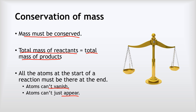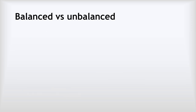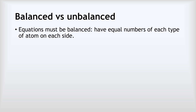Mass must be conserved to make sure that every atom that was there at the start of a reaction is still there at the end. This leads to the concept of equations being balanced or unbalanced. Equations must be balanced — they must have equal numbers of each type of atom on each side. If they don't, we don't have conservation of mass and something's gone wrong.